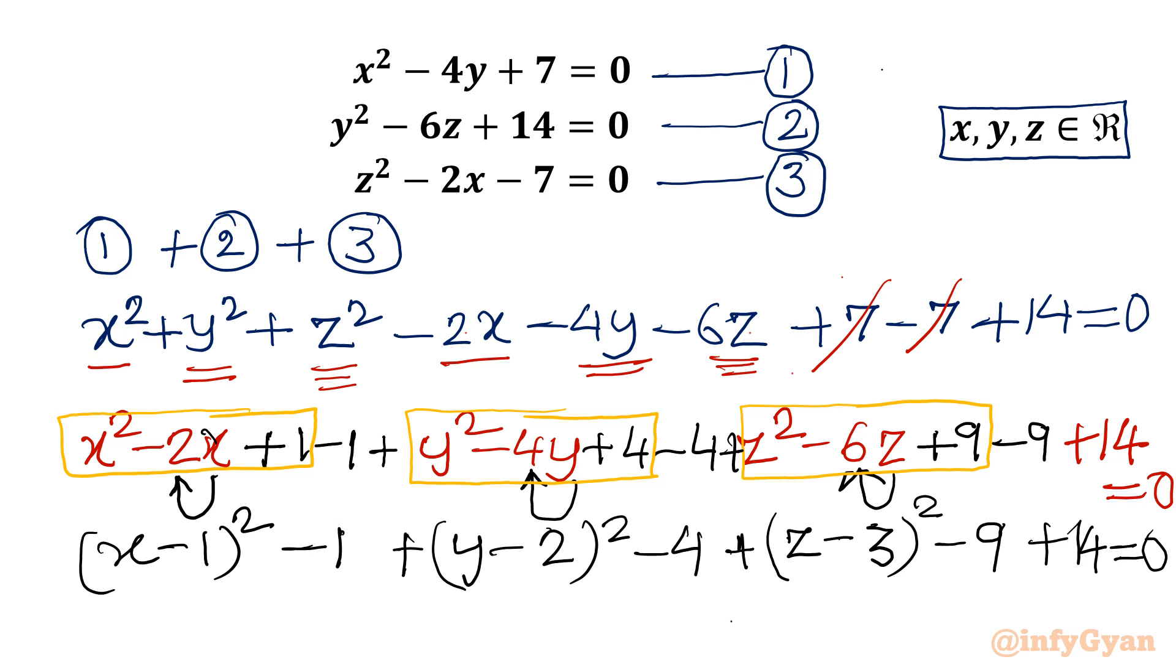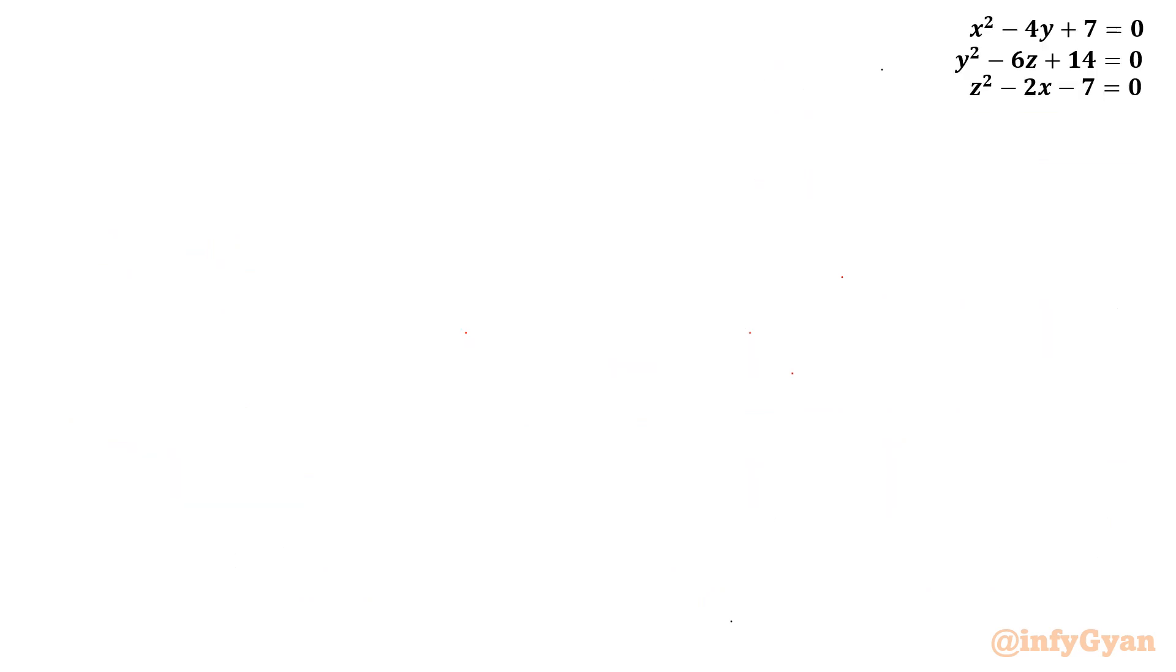Now let us add all the constant with negative sign: -1 - 4 - 9 equals -14. So I can cancel minus 14 with plus 14. So it is left (x - 1)² + (y - 2)² + (z - 3)² in LHS, and in RHS it is 0. Let us write: (x - 1)² + (y - 2)² + (z - 3)² = 0.